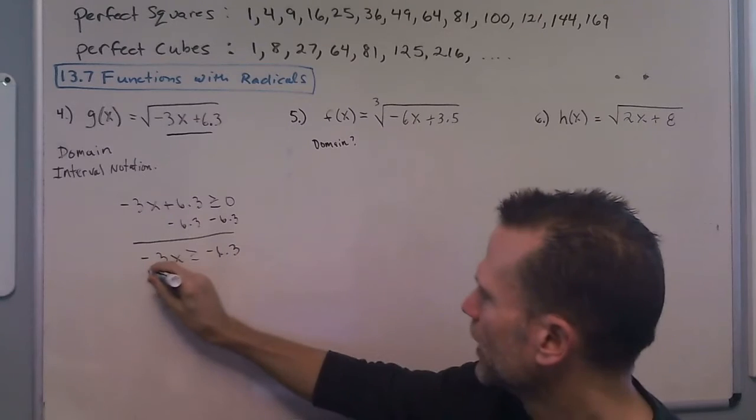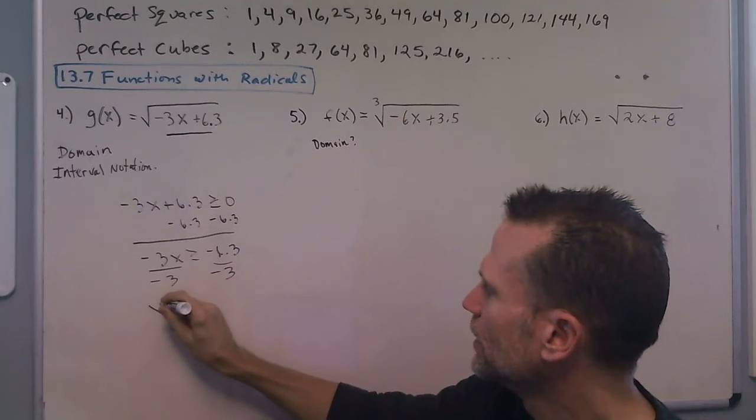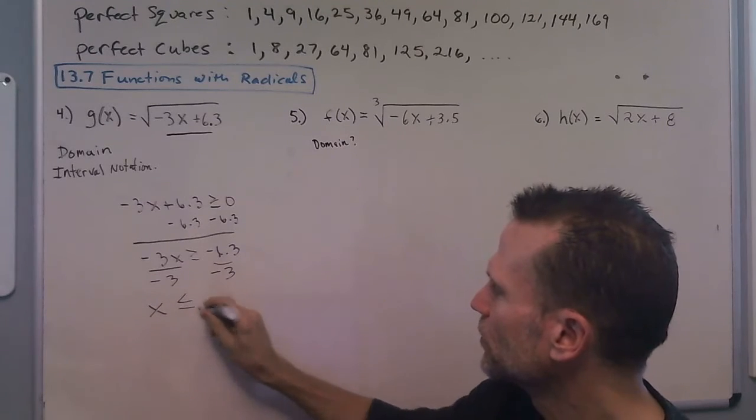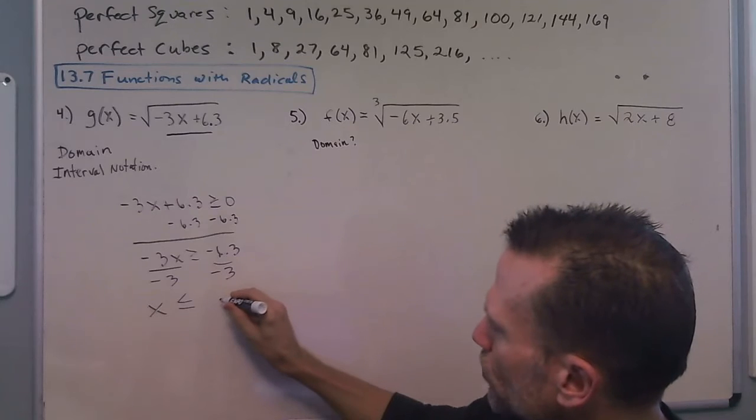And then we can divide by negative 3. And we get x is less than or equal to, remembering our rule, dividing by a negative, 2.1.